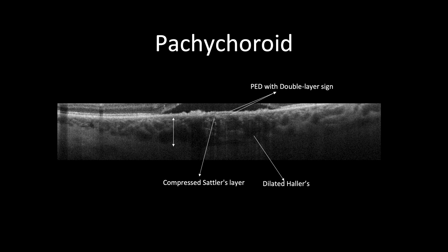With increased reflectivity of Bruch's membrane forming a double layer sign, pachychoroid is sometimes associated with subretinal fluids and occasionally can be associated with changes in outer retinal layers. Please remember that the choroid is best studied using enhanced depth imaging (EDI) or swept source OCT.